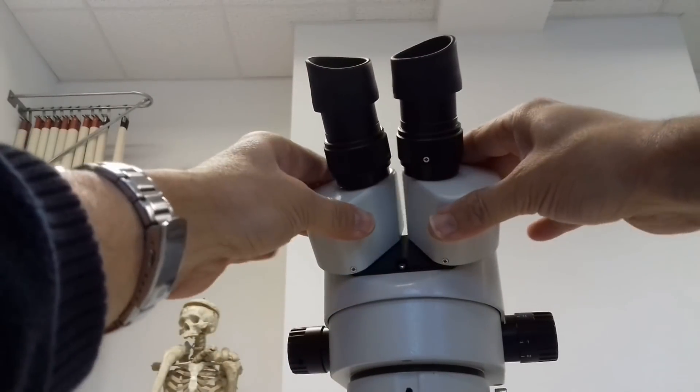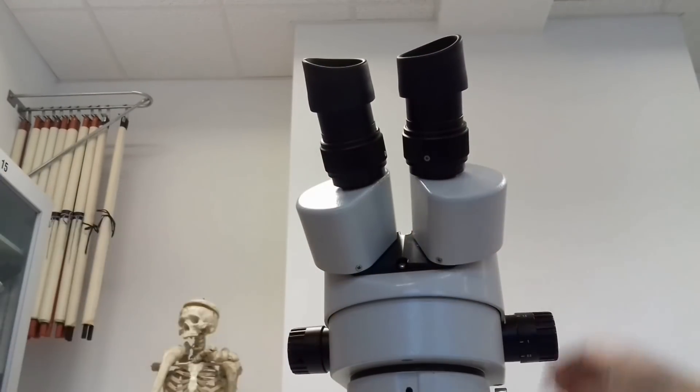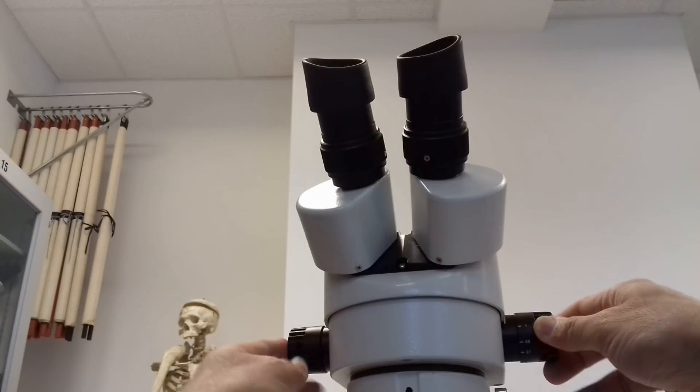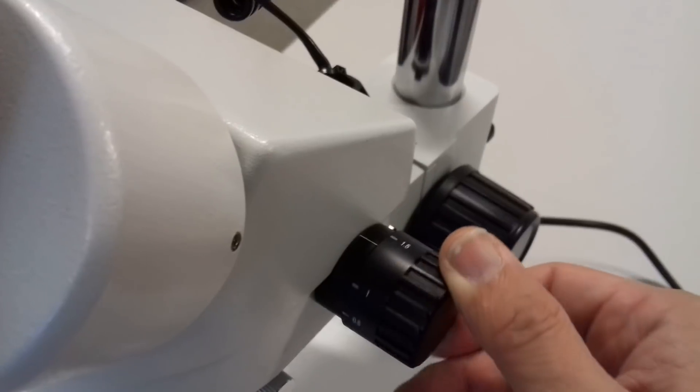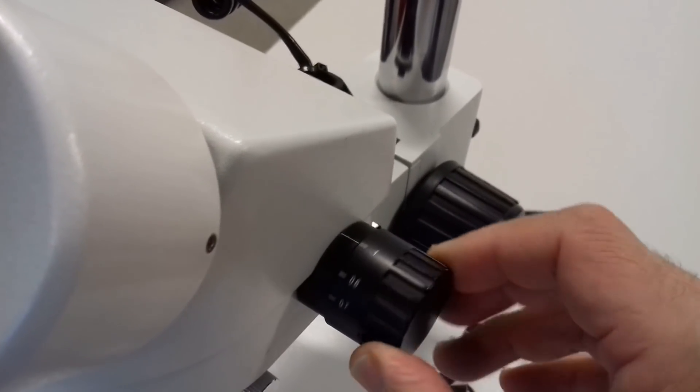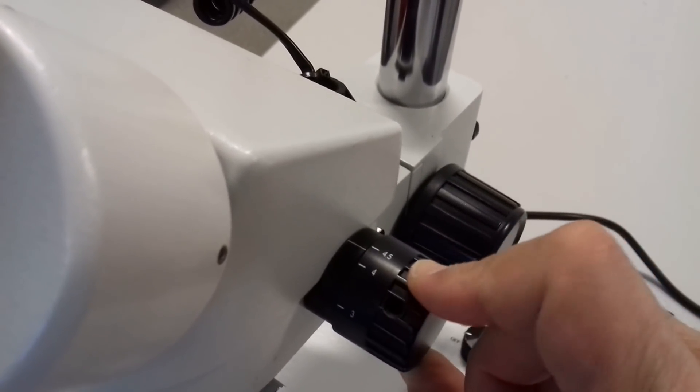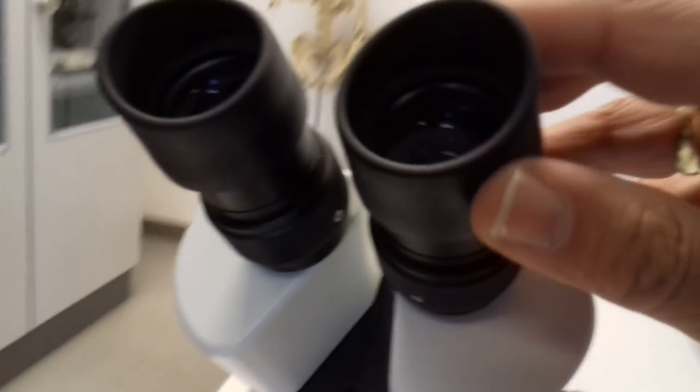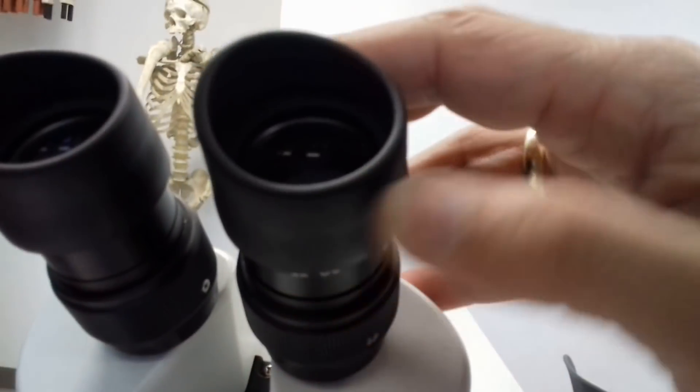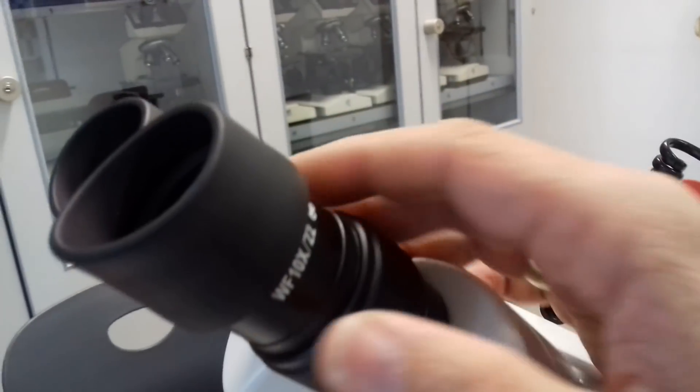That because there are prisms in the stereo microscope which turn the image upright. So that is the zoom function, so I'm kind of turning this and you can actually see that on the outside there is not a big change because all of the optics they move inside. 4.5 multiplied by 10, which is the magnification of the eyepiece, gives you a total magnification of 45.